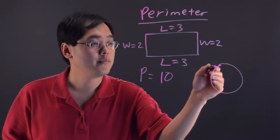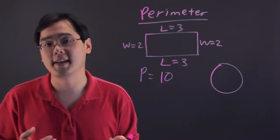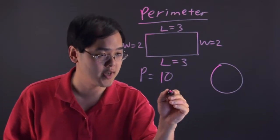Now, a circle, you can technically find the perimeter of a circle but we don't call that. We call finding the perimeter of a circle the circumference.